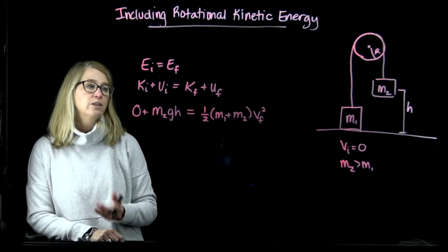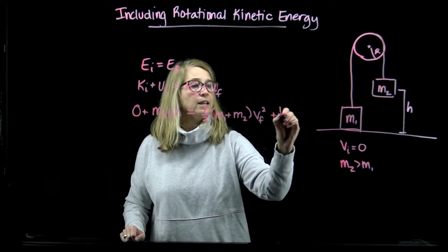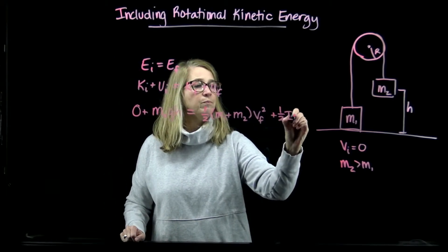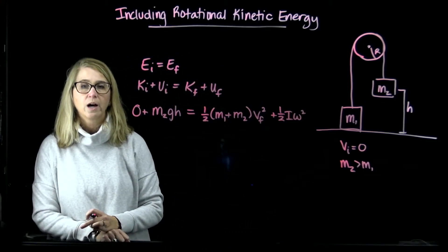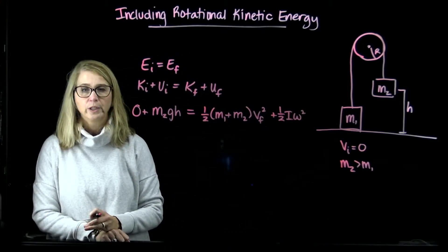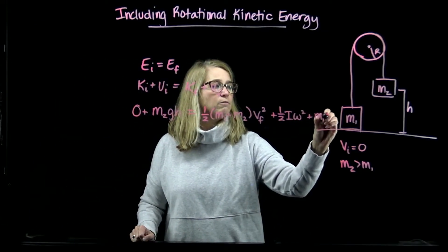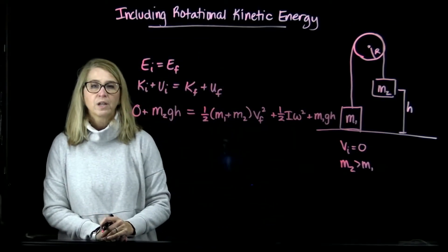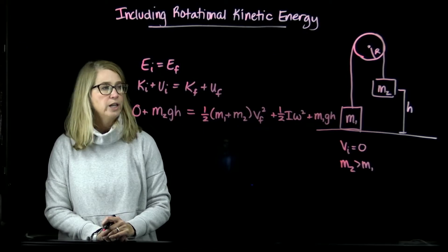Now the thing that we want to include is the kinetic energy of the pulley, which is going to be 1/2 I ω², where I is the moment of inertia of the pulley. And finally, m1 is going to raise to that initial height of h, so we have potential energy of m1gh.